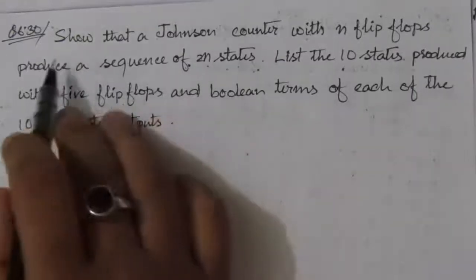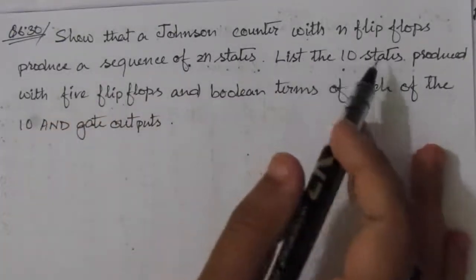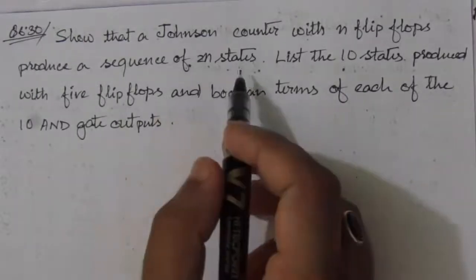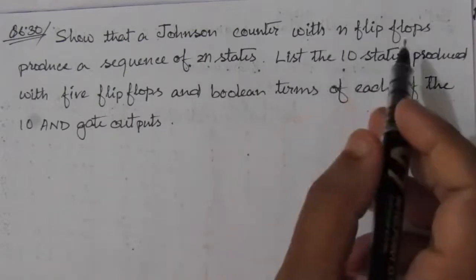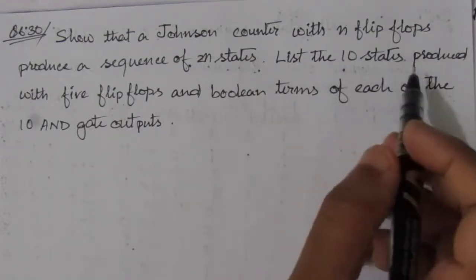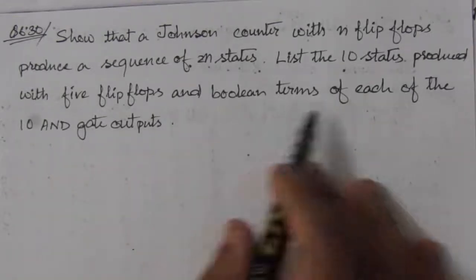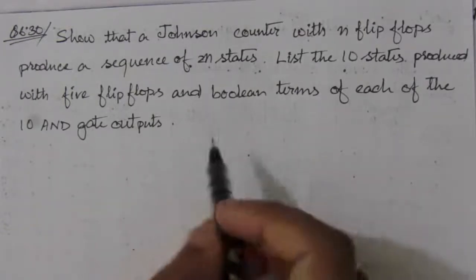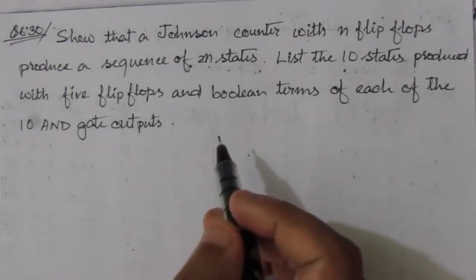A Johnson counter with n flip-flops produces a sequence of 2n states, meaning the number of states equals twice the number of flip-flops. In the second part of the problem, we have to list the 10 states produced by five flip-flops and write the boolean terms of each of the 10 AND gate outputs — that is, we also need to write the decoding expressions.